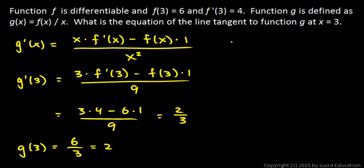So then we can use the point-slope form of the equation of a line. y - y₁ = m(x - x₁). So let's say y - 2 is going to equal the slope, that's 2/3, times x - 3.